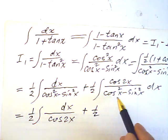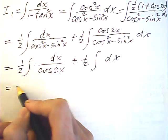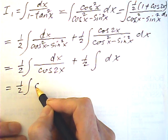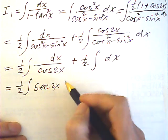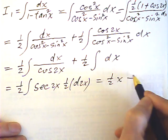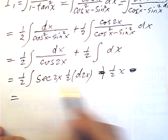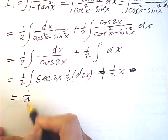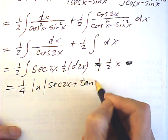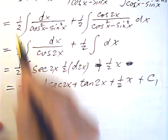This is also cosine 2x, and it becomes 1. Then I change this into secant 2x and write dx as (1/2) d(2x). This is half x. And this becomes one quarter. So this integral is (1/4) log|secant 2x + tangent 2x| plus (1/2)x plus c1. That is I1.